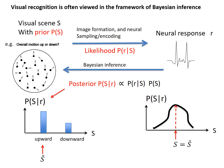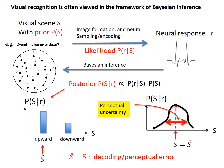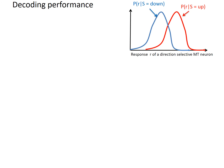The difference between the perceived and the actual visual property is the decoding error or perceptual error. When this error is large enough, it gives visual illusions. The spread of the posterior distribution characterizes the perceptual uncertainty. In the discrete case, when the probabilities for both S values are substantial, the perceptual uncertainty is also substantial, and it can lead to ambiguous perception or perceptual rivalry.